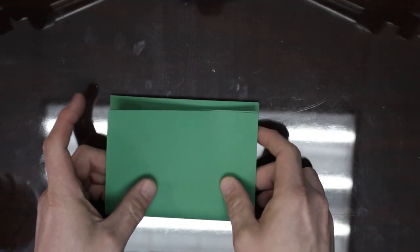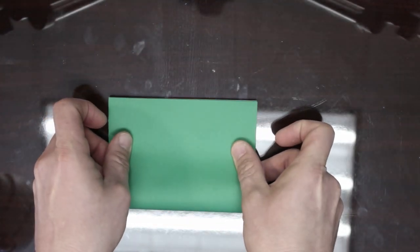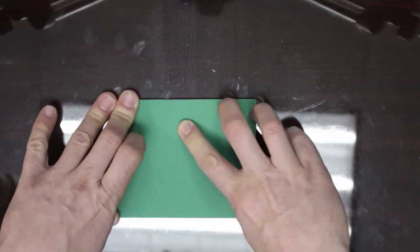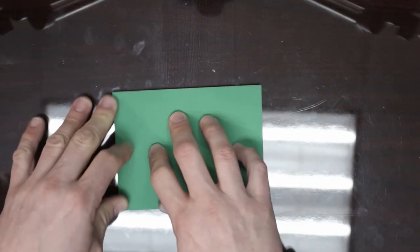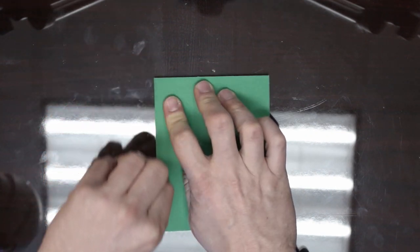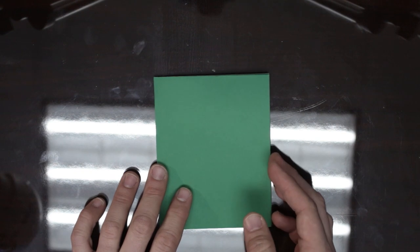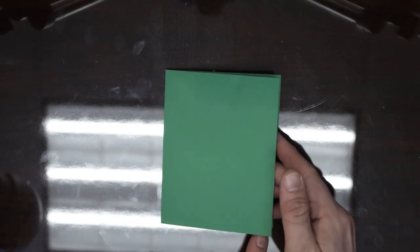Now fold number two. We fold it twice because that's going to hide our circuit inside of our card.